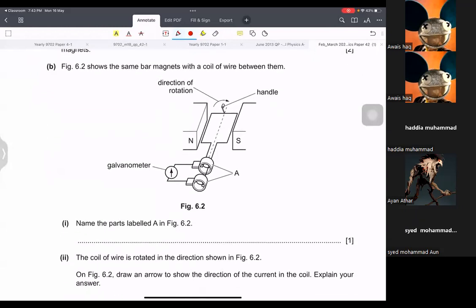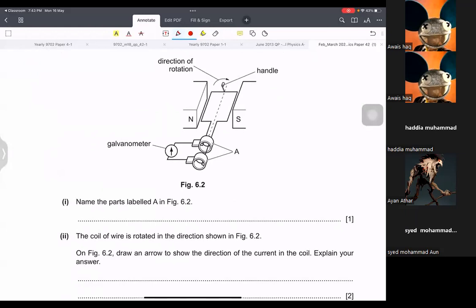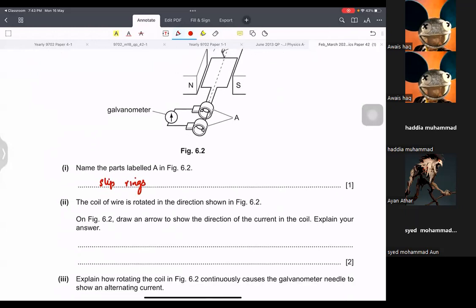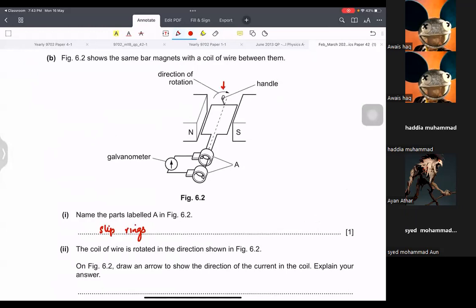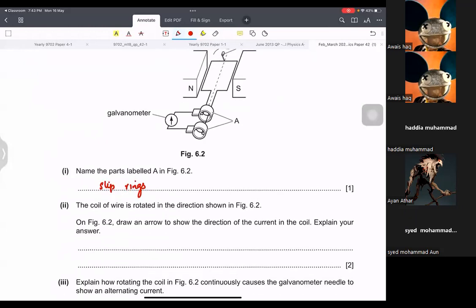Show the bar magnet with the coil. Name the parts labeled as A. Slip rings. We did it the other day. The coil of wire is rotated in the direction shown. Draw an arrow to show the direction of current in the coil. Explain your answer.